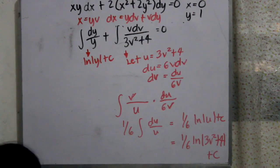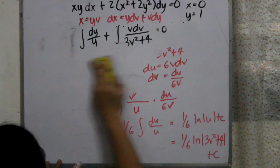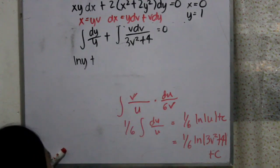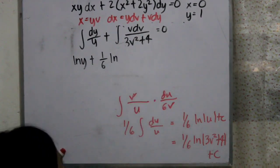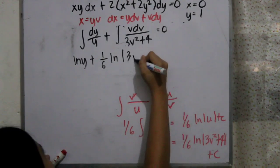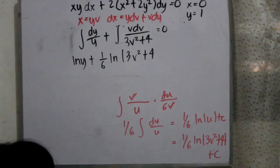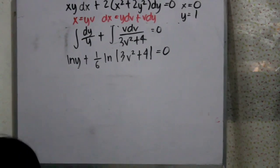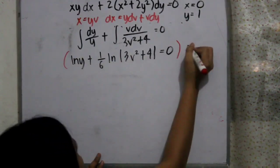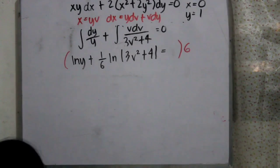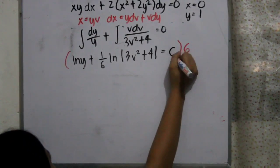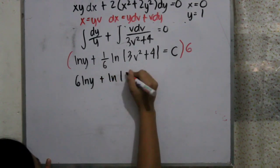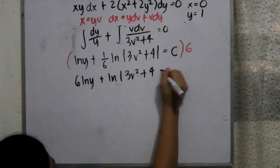Now we have both answers, so we combine them: ln y plus (1/6)·ln(3v² + 4) equals c. To remove the fraction, we multiply everything by 6, giving 6·ln y plus ln(3v² + 4) equals c. We didn't multiply c by 6 because c is just a constant and will always remain c.